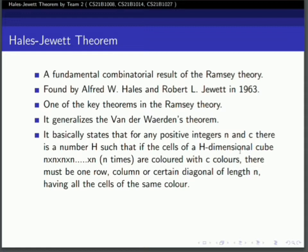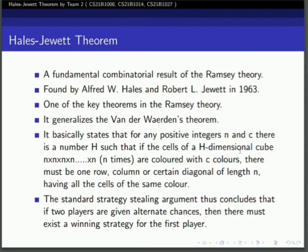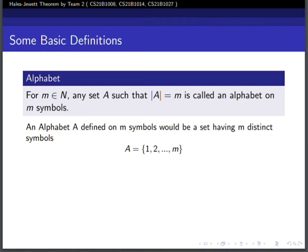The theorem means that for any positive integers n and c, there is a number h such that if the cells of an h-dimensional cube are colored with c colors, there must be one row, column, or diagonal of length n having all cells of the same color. We can conclude by game theory argument that there must exist a winning strategy for the first player.